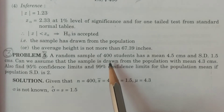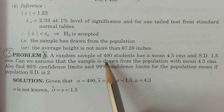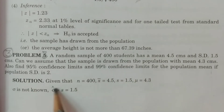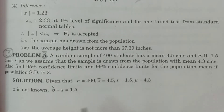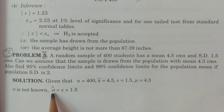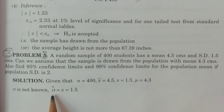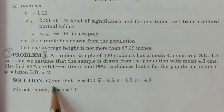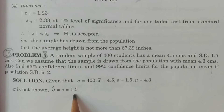Given n, x̄, sample standard deviation s, and population mean μ, we note that the population standard deviation sigma is not known. This is Case 2: sigma not given. Therefore, sigma is estimated with s, so σ̂ = s = 1.5.